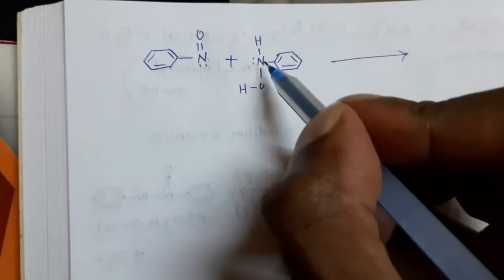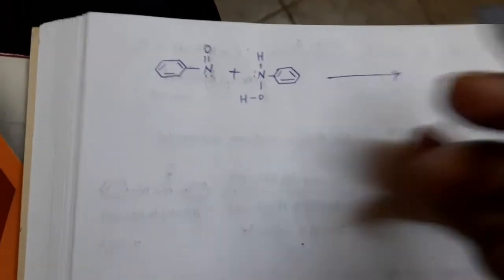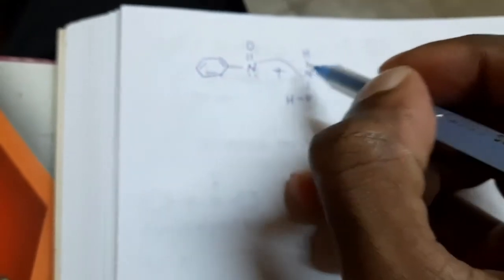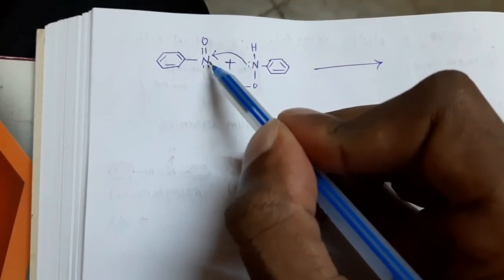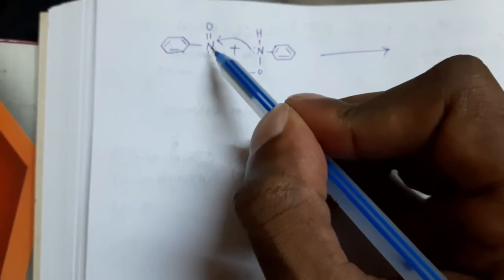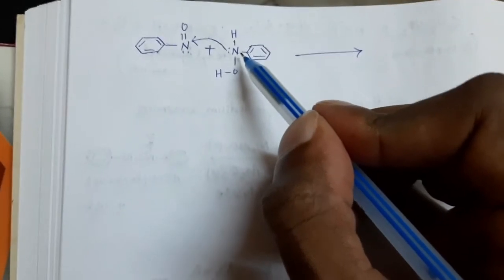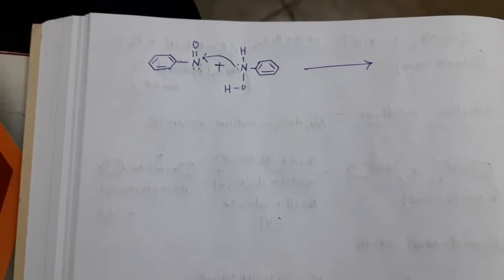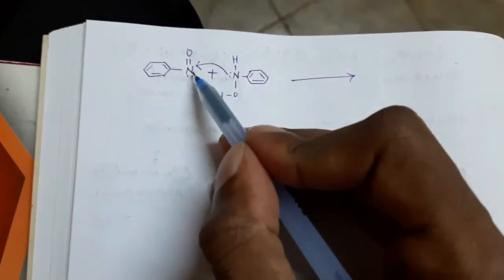Here nucleophilic attack takes place. The nitrogen atom present in phenylhydroxylamine acts as a nucleophile. This lone pair of electrons present on this nitrogen attacks the nitrogen atom of nitrosobenzene. In hydroxylamine, nitrogen has a lone pair of electrons so it can act as a nucleophile, and nucleophilic attack takes place on the nitrogen atom of nitrosobenzene.